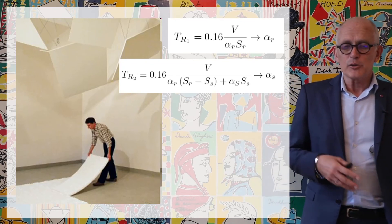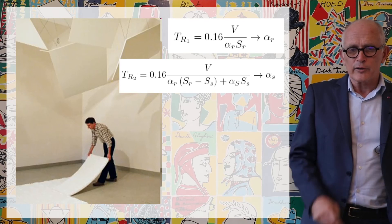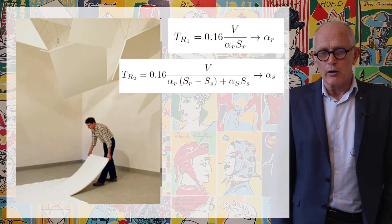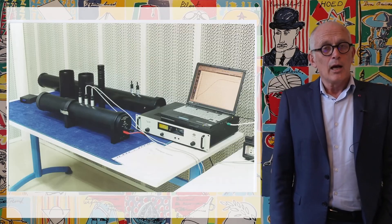This measurement, because we know all the factors except alpha-S, gives us the absorption coefficient of the sample.